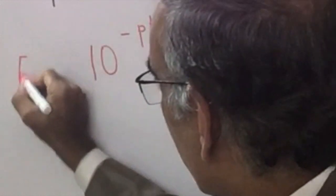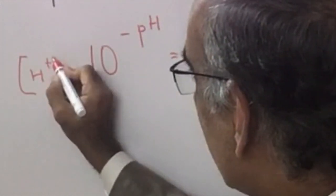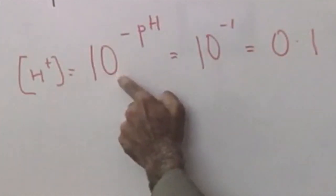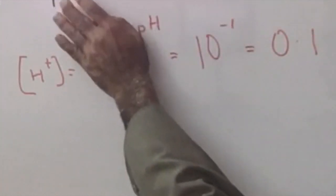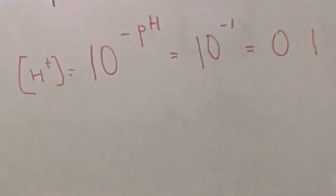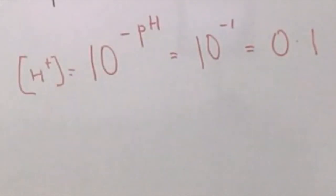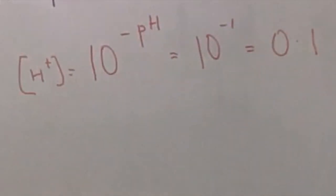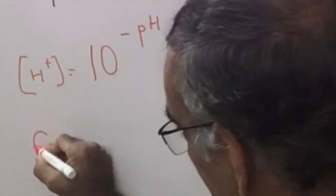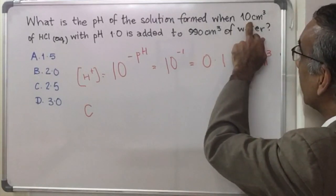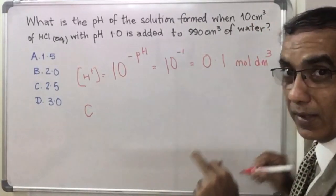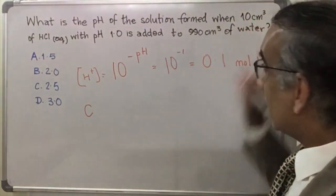So to get the concentration of hydrogen ions, we can say 10 to the negative pH. And if we have a completely dissociated strong acid like HCl, then we can say we have 0.1 moles per dm³ as its concentration. Now that we know its concentration in moles per dm³, we've also got its volume — but that volume is given in cm³.